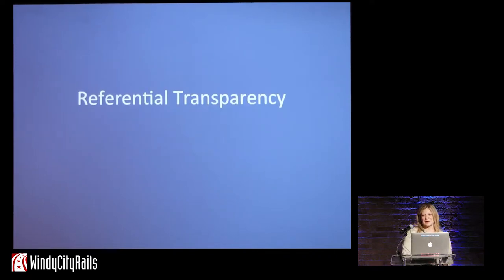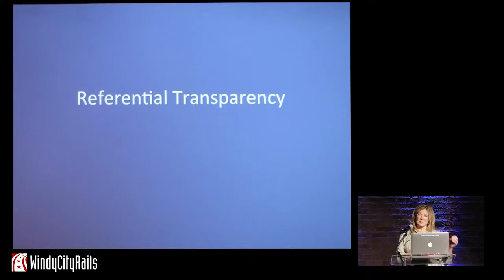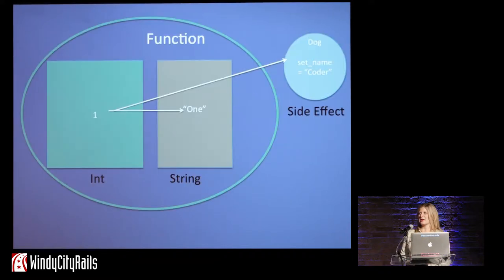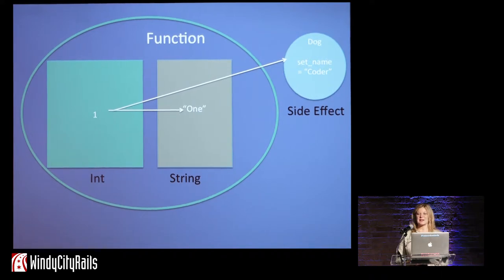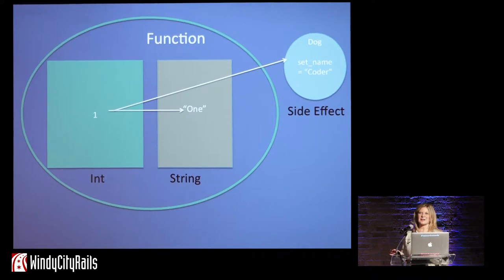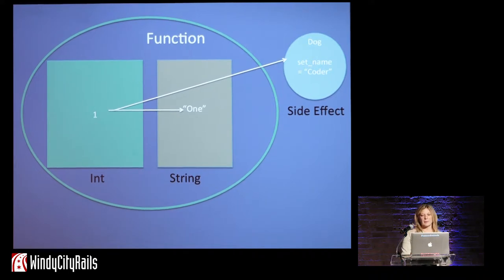Referential transparency. This is a phrase that tells us that every function should have inputs and outputs and no side effects. Side effects are things like: if I have a function that takes an integer and returns a string, it shouldn't also, before returning that string, go off and change a property on an object. That's a side effect — don't do that. It breaks a lot of your abilities, some of the great things you get with functional programming.